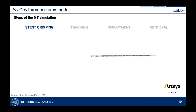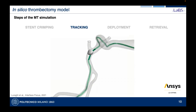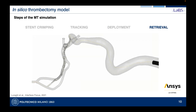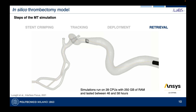The simulation steps performed in LS-DYNA were: first, stent crimping inside the microcatheter; then navigation of the stent through the catheter to reach the occlusion position based on the provided images; then deployment by progressively removing contact with the catheter to simulate unsheathing, at which point the stent and thrombus interact; and finally retrieval, where the stent tip is moved along the catheter centerline. Each simulation ran on 28 CPUs with 250 GB of RAM and lasted between 46 and 58 hours.